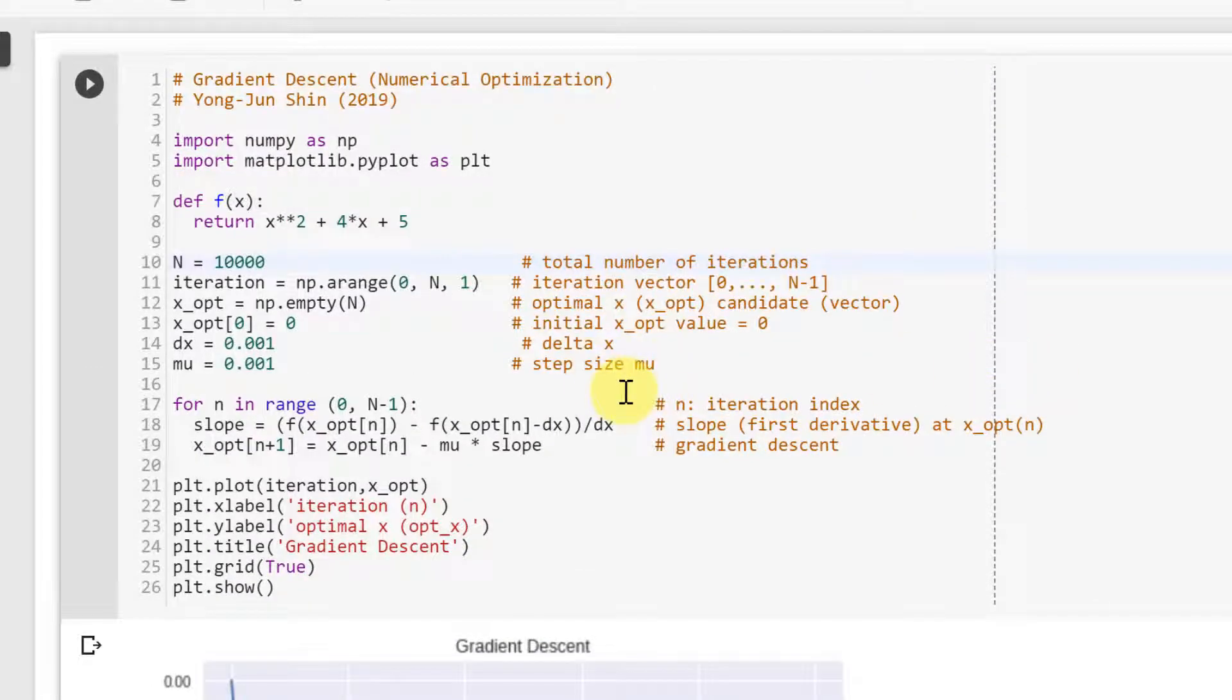Okay, so step size matters. If you decrease step size, basically you only have to do more computation. Then it doesn't mean that if we increase step size, it's always better. So let's make it 0.01 this time and run it.